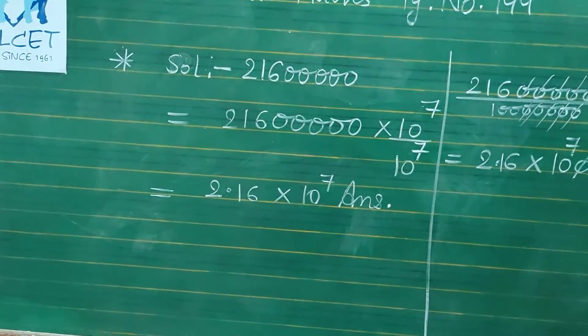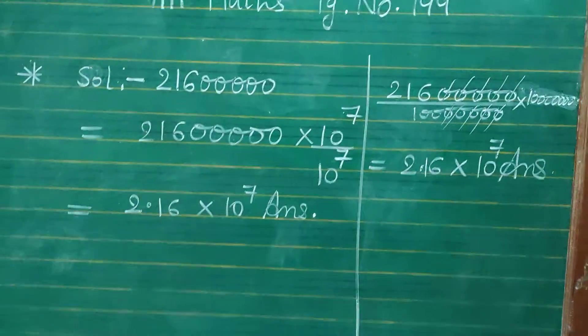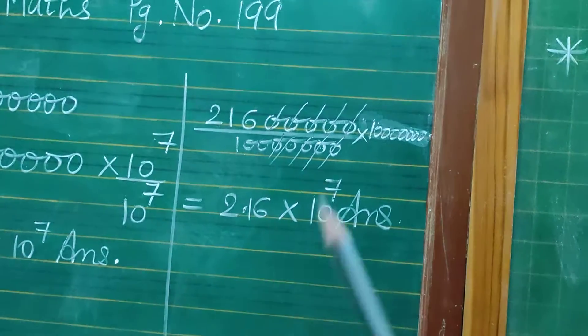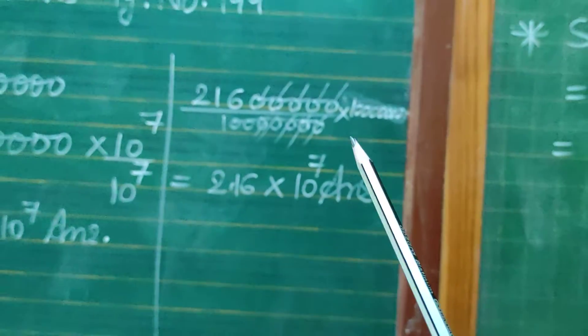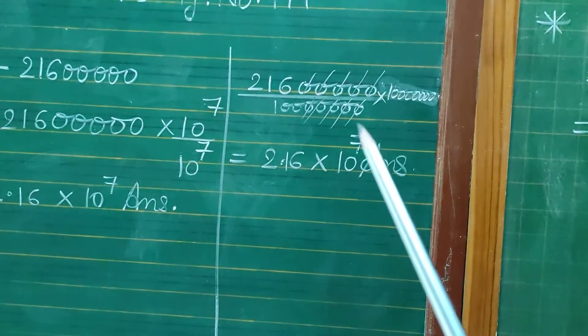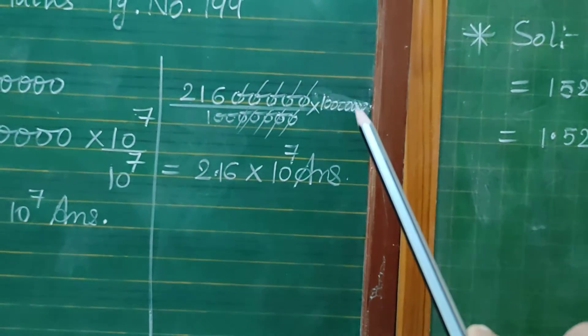Actually the method is in detail if you will see. You can see here 2, 1, 6 and 5 zeros are there and we are multiplying and dividing by 1, 10, 100,